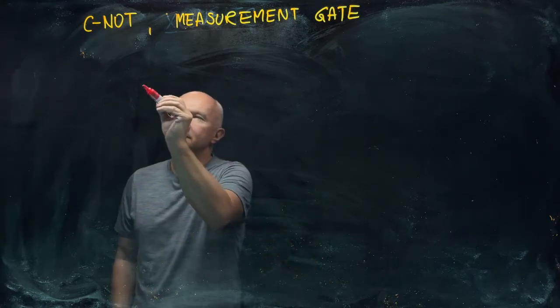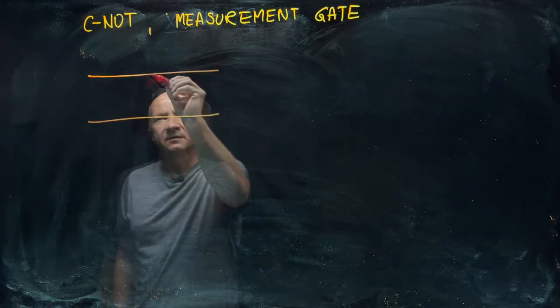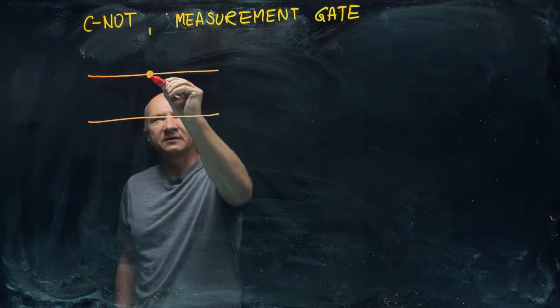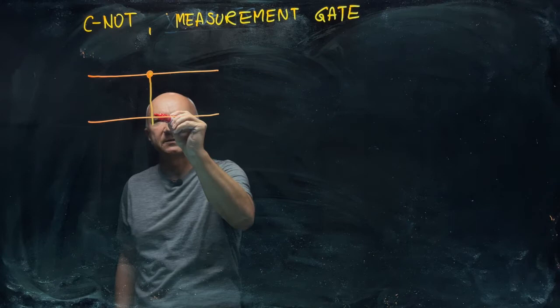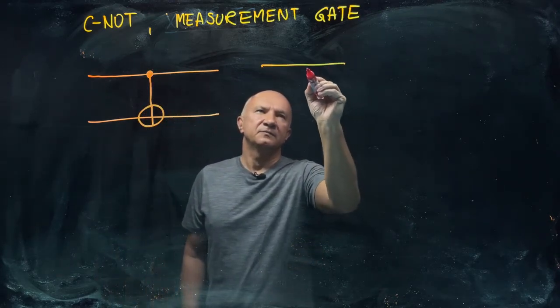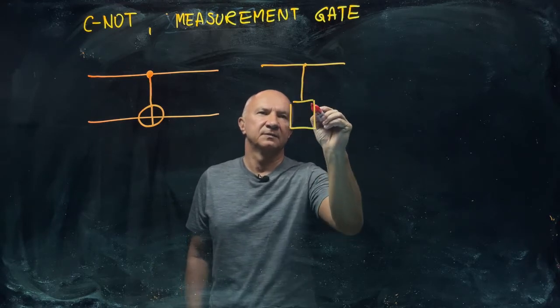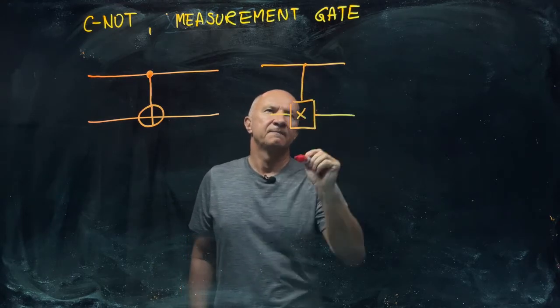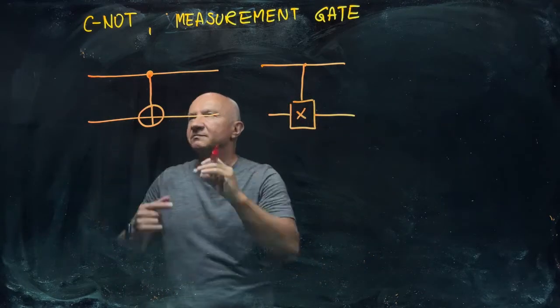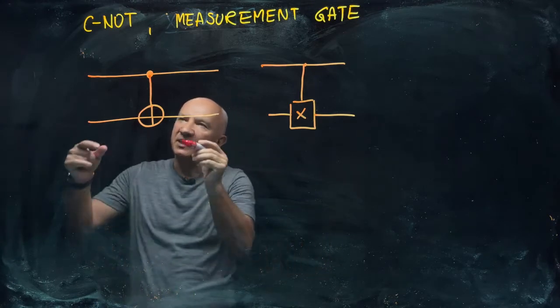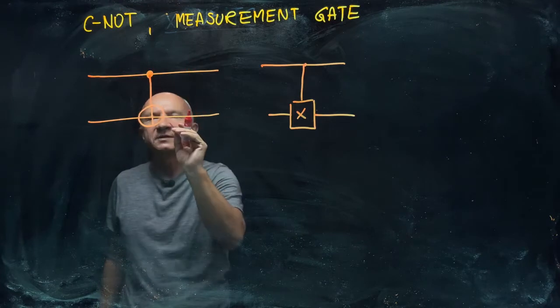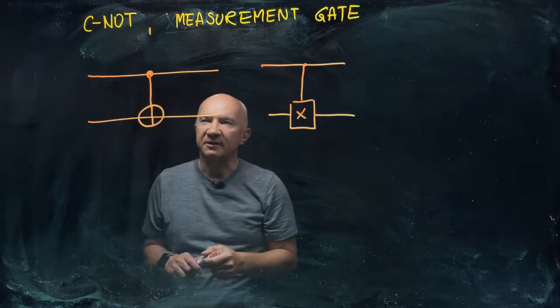So we have two qubits. The symbol for this gate is when I put a dot here that means a control qubit, and the gate looks like this, even though you can also write it in this way. But I think this one is probably more common. Let me describe what it means. We have two qubits here: we call the top qubit the control qubit, and the bottom qubit is called the target qubit.